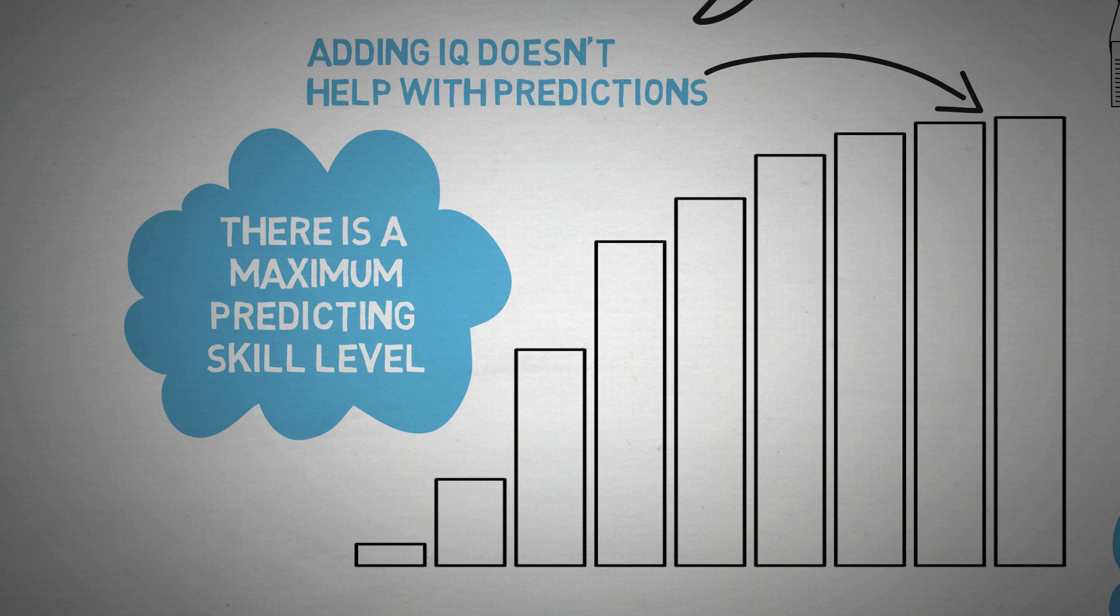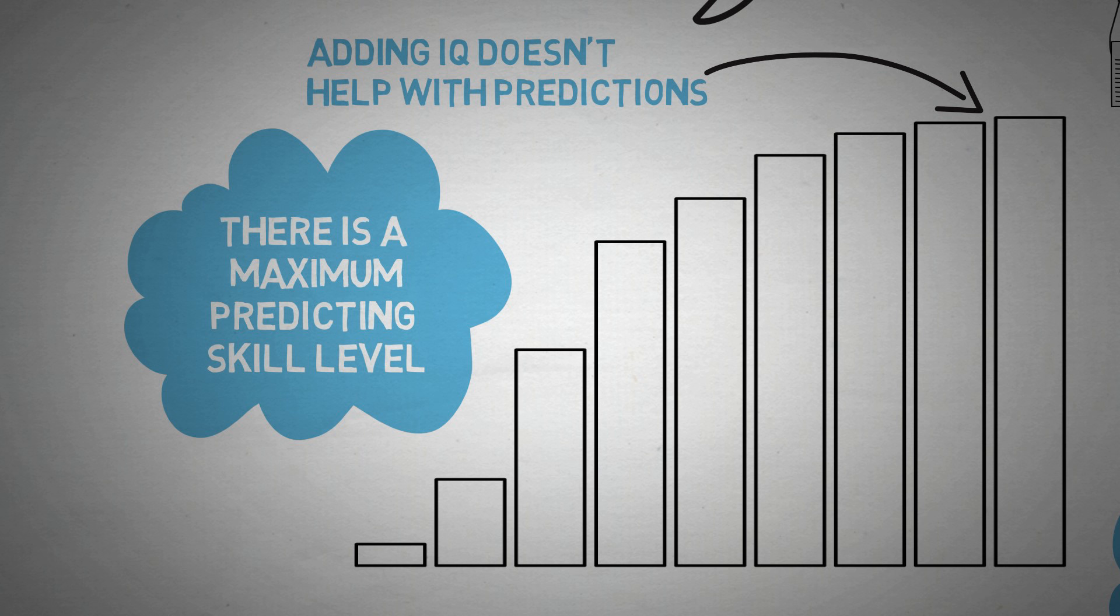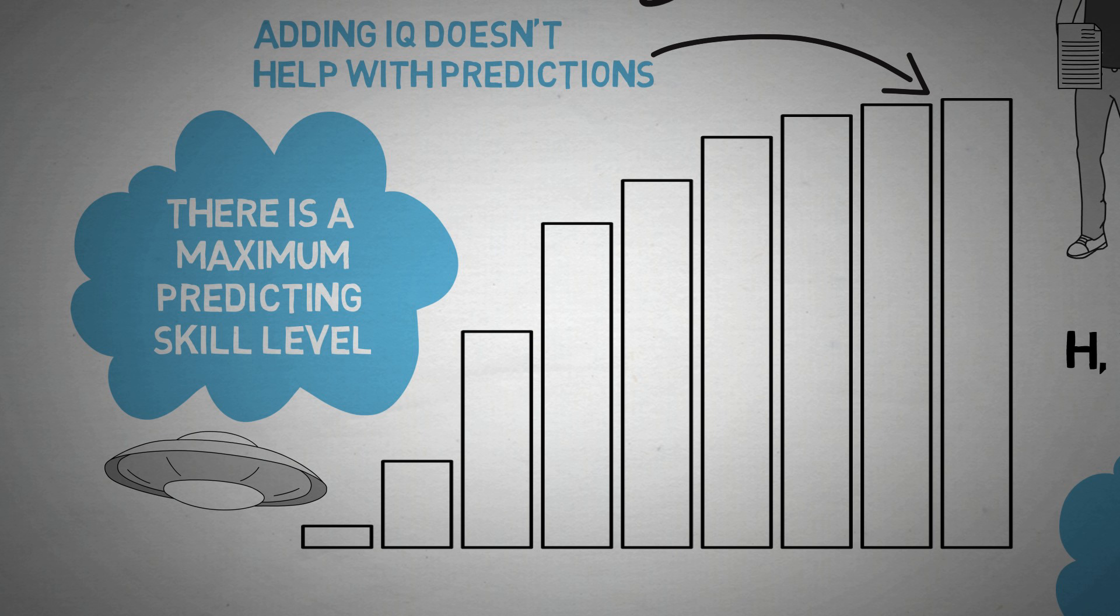The knowledge curve is saying with a whole bunch more knowledge, we're only going to get a little bit better at predicting. And even then, there's going to be some factors, like what if a black hole just randomly sucks up the universe? There's going to be stuff that we cannot predict.